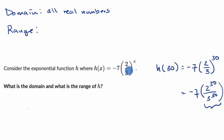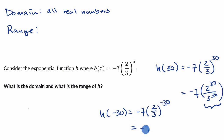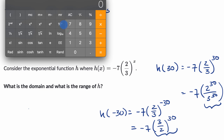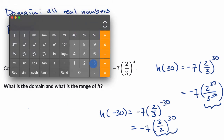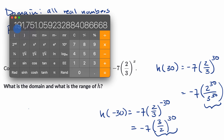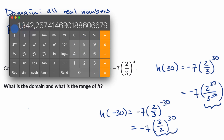If we go the other way and think about negative exponents — say h of negative 30 — that's negative seven times two-thirds to the negative 30, which is the same as negative seven times three-halves to the positive 30th power. Three-halves to the 30th is a very large positive number, which we then multiply by negative seven to get a very large negative number. To verify: three-halves, which is 1.5, raised to the 30th power equals roughly 192,000. And if I multiply by negative seven, it becomes a little over negative one million.